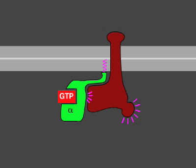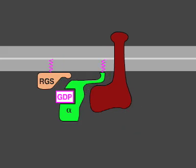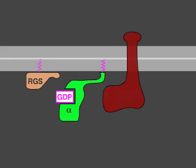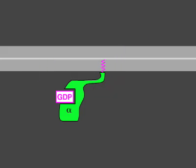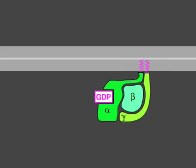The activated target proteins then relay the signal to other components in the signaling cascade. Eventually, the alpha subunit hydrolyzes its bound GTP to GDP, which inactivates the subunit. This step is often accelerated by the binding of another protein, called a regulator of G-protein signaling, or RGS. The inactivated GDP-bound alpha subunit now reforms an inactive G-protein with a beta-gamma complex, turning off other downstream events.